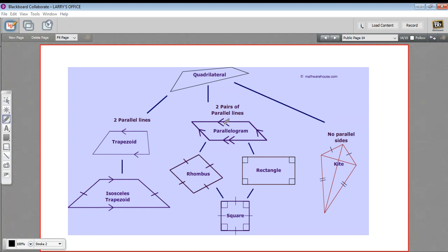So the way to read this tree, everything here is a quadrilateral, which just means it has four sides. And parallelograms are special quadrilaterals that have two sets of parallel lines opposite each other. And those parallel lines are the same length in a parallelogram.